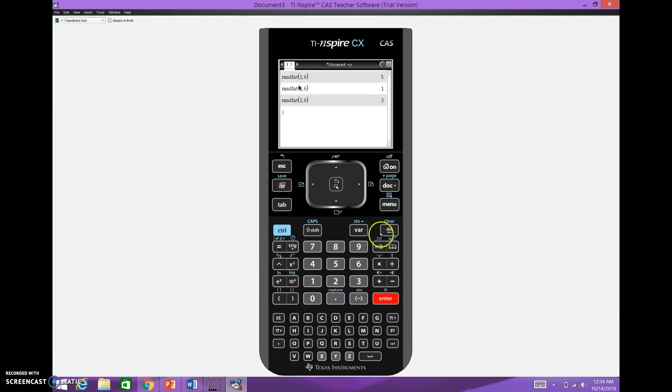I can also do this. I can go Menu, Probability, Random, Random Integer, and then go one, comma, six, and let's just say I'm going to roll two dice, comma, two. Finish out the parentheses. And there I've got a listing of two dice. I rolled a six and a two, and a five and a six, and a two and a three.